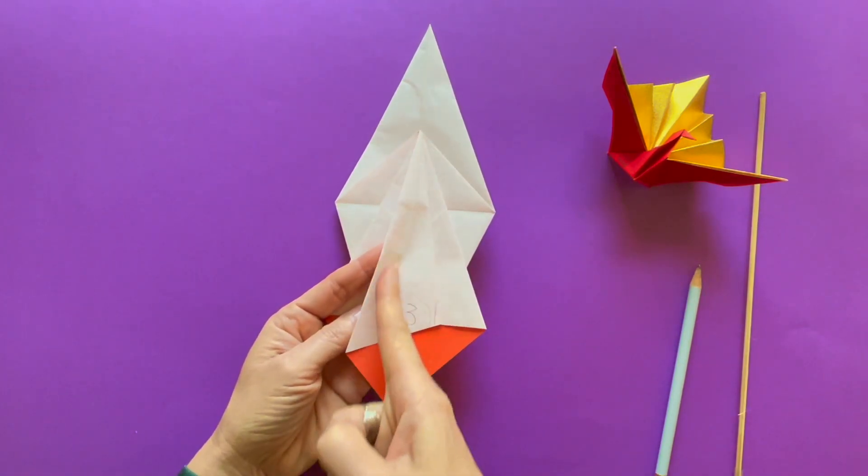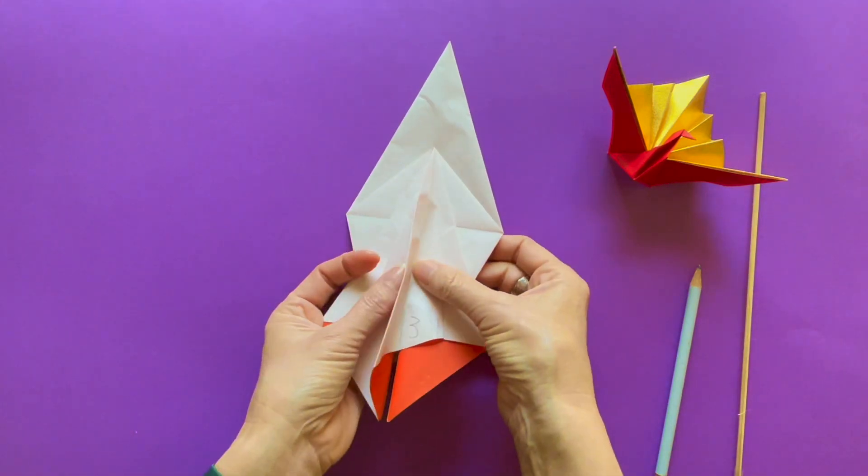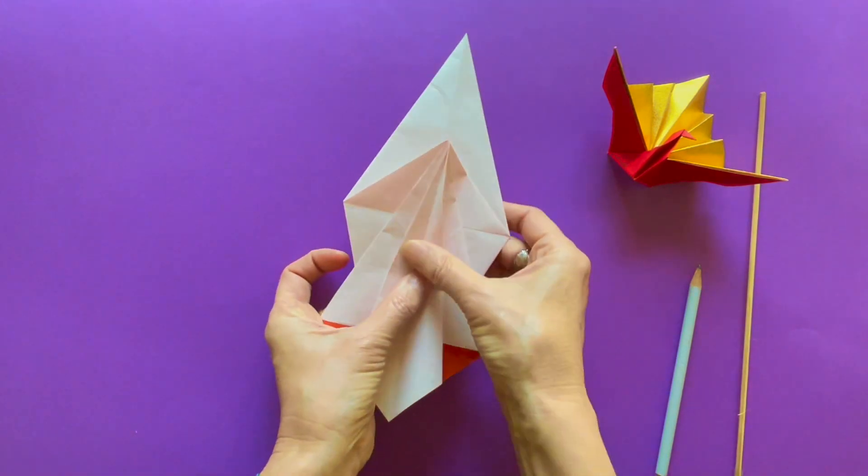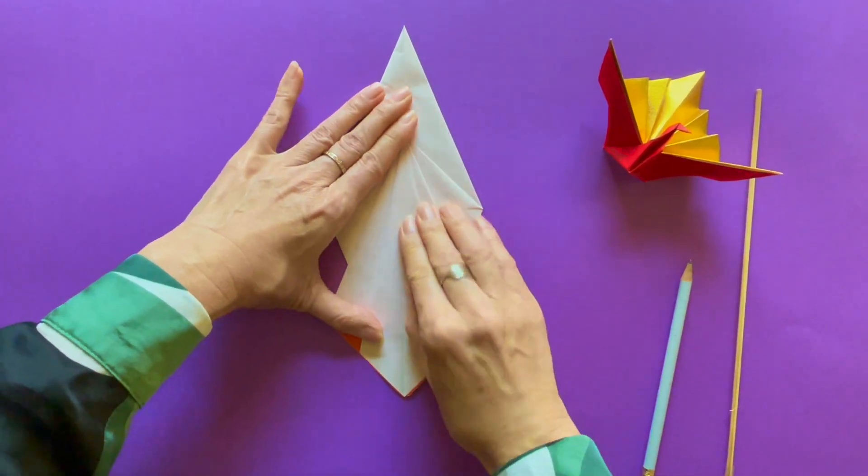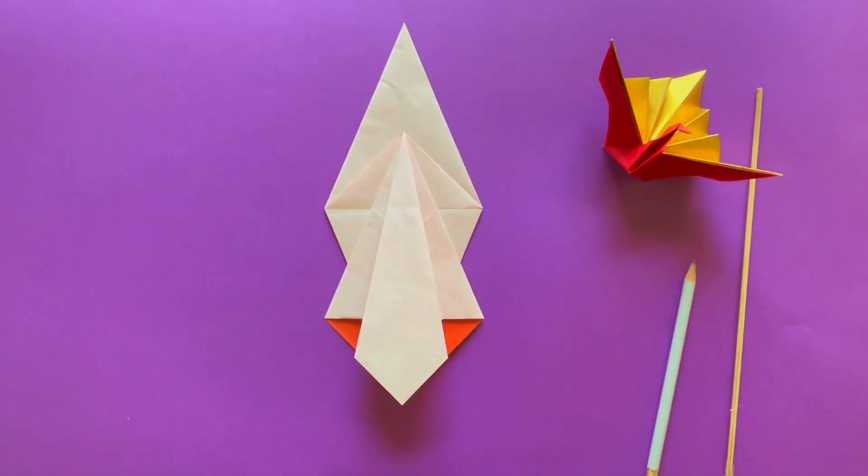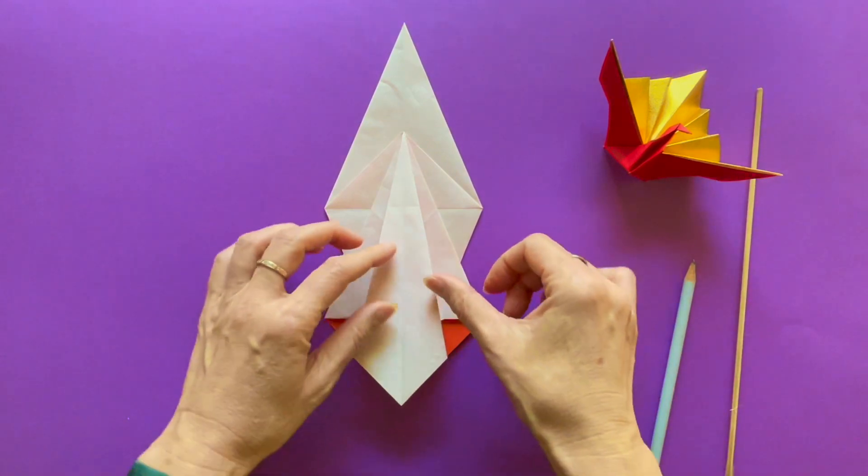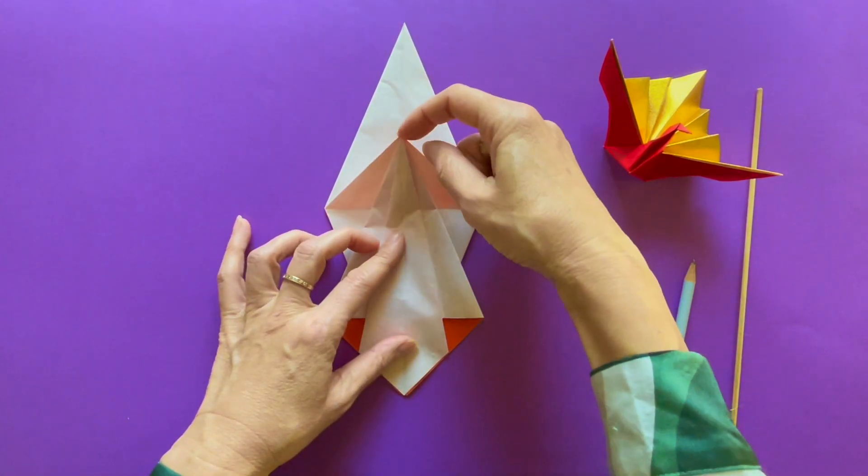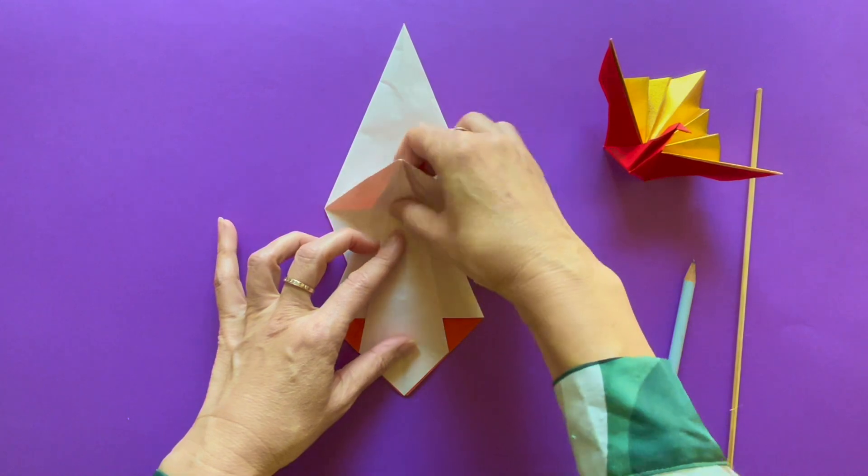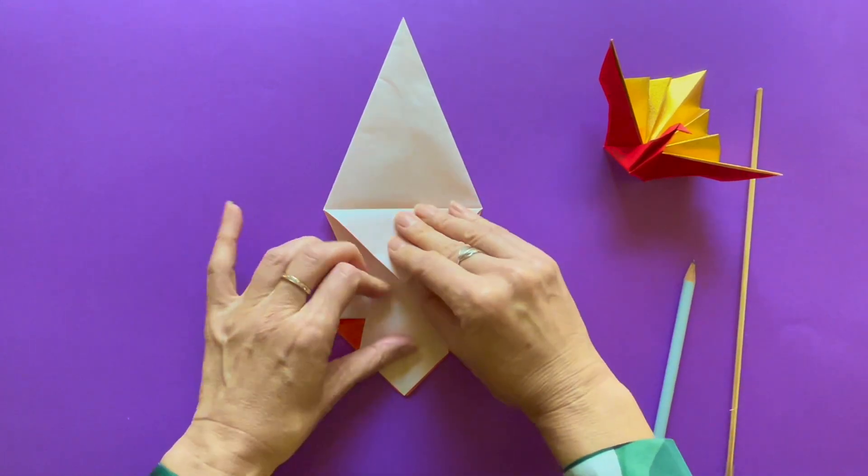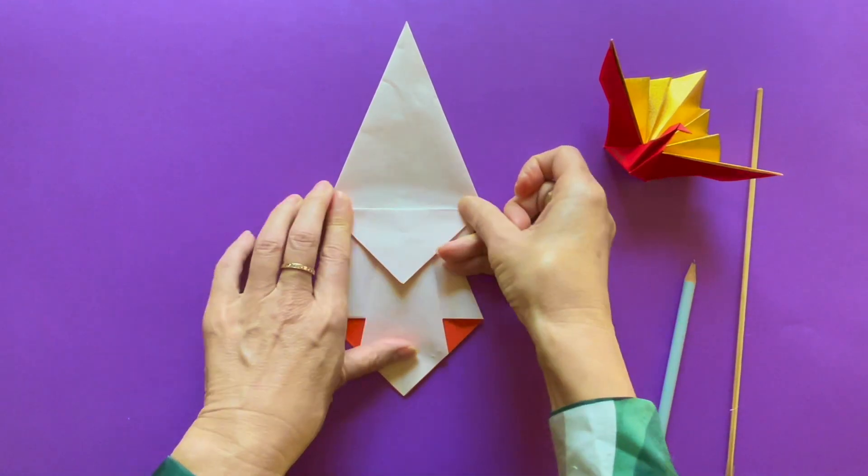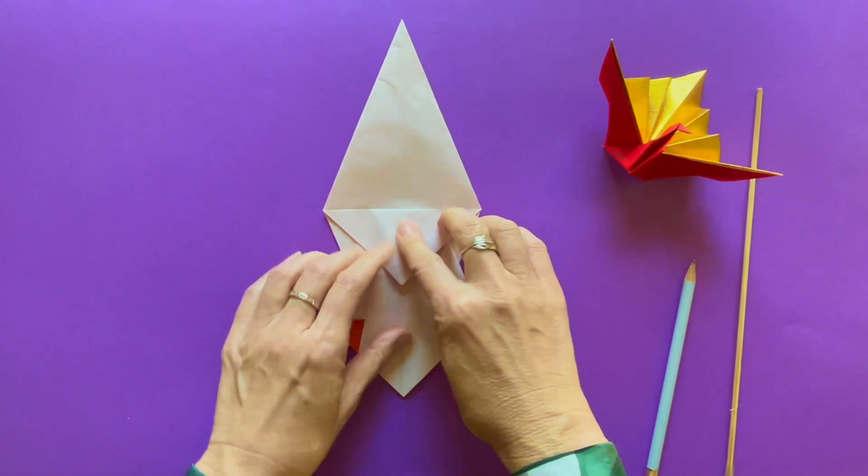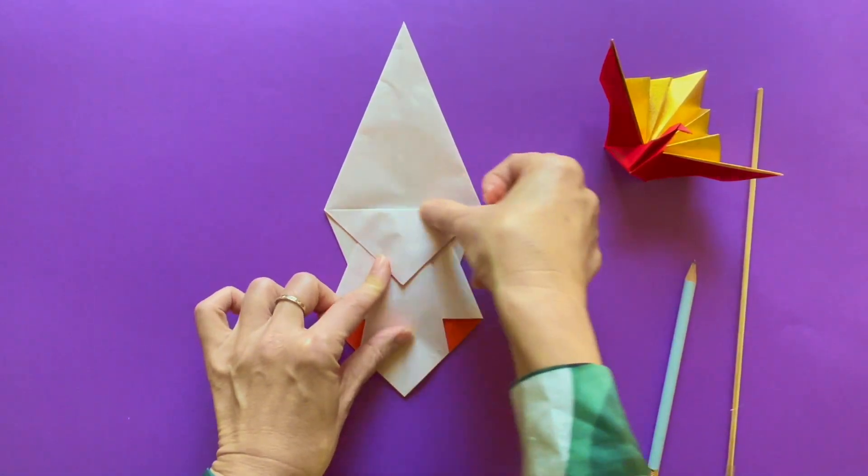This part is over. Push the side you just created to the right. And you will see the shape like this. It's a beautiful design at this point. In the middle, there's a triangle flap. Fold it down. We are halfway through.